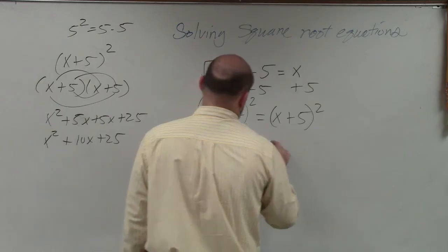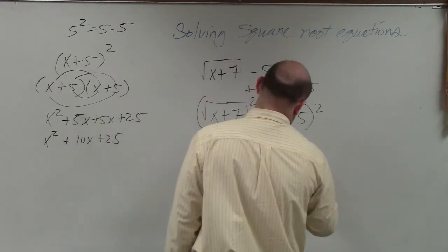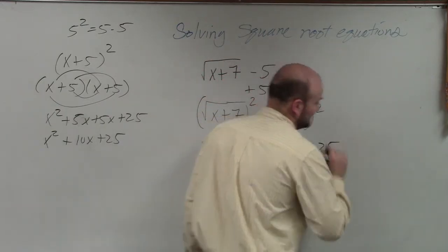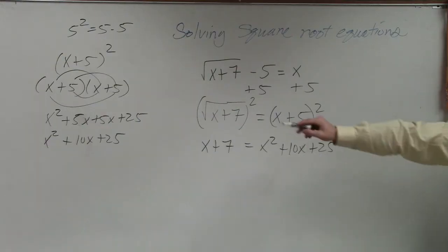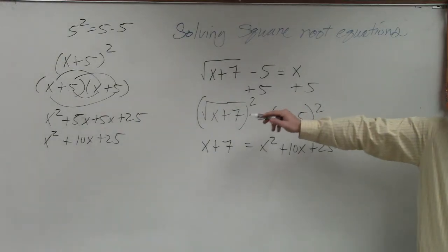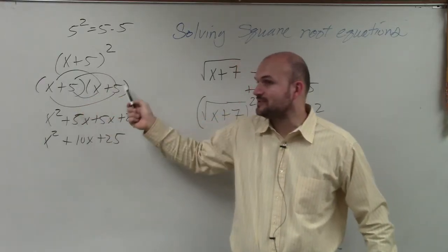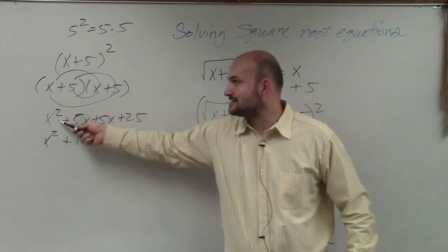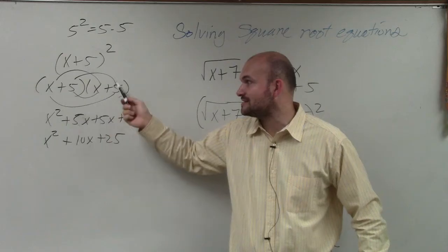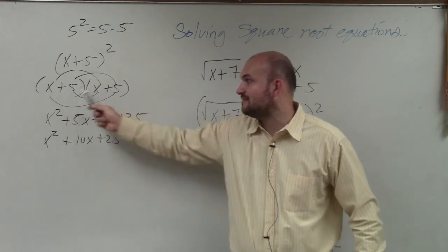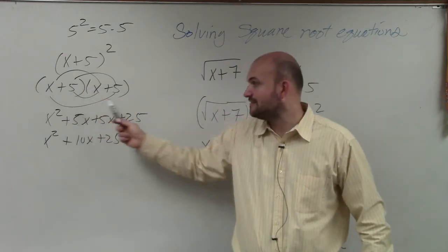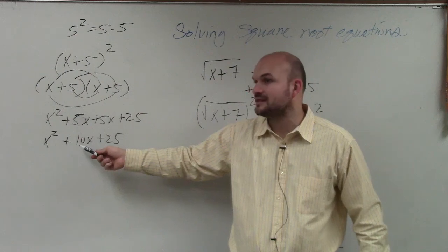Does x plus 7 equals x squared plus 10x plus 25? I just did FOIL. x plus 5 squared is x plus 5 times x plus 5. x times x is x squared, 5 times x is 5x, 5 times x is 5x, 5 times 5 is 25. 5x plus 5x is 10x, have you seen that, Justin? Yeah.